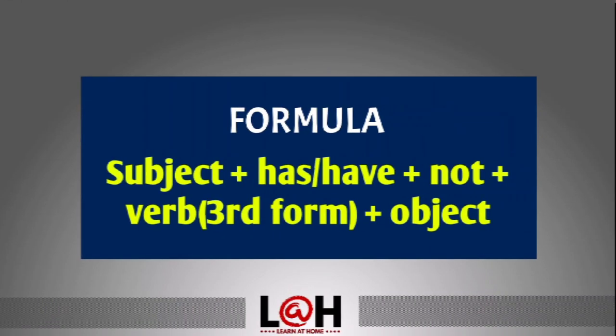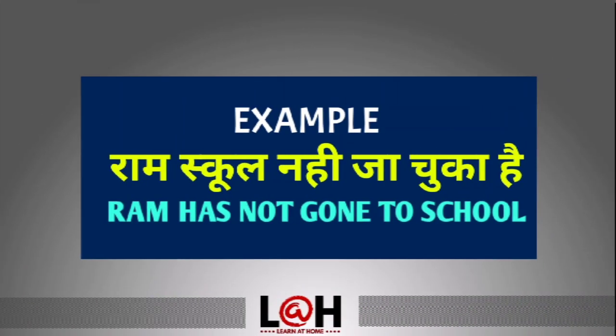Negative formula: Subject + has/have + not + third form of verb + object. For example, 'Ram school नहीं जा चुका है' — Ram has not gone to school. जो काम हो चुका है या नहीं हुआ, उस time पर जो घटित हुआ है, उसे हम present perfect tense बोलते हैं। So: Ram has not gone to school.